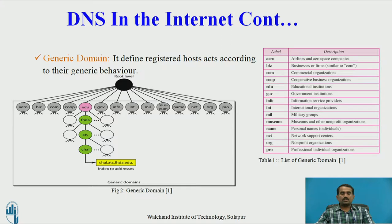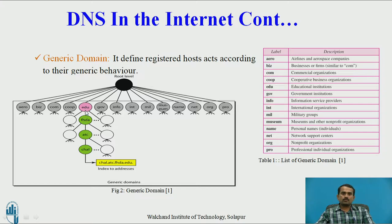First one is generic domain. Generic domain defines all registered hosts acting according to generic behavior. There are many domains such as .com, .co-op, .edu, .gov, .info. Taking dot edu as an example — this is the main domain, and subdomains like challenger, atc, and fhda.edu are registered to this main domain. These subdomains must act according to the generic behavior of the .edu domain. Different domains are used for different purposes — for example, .aero is for airlines and aerospace companies.